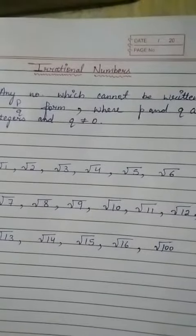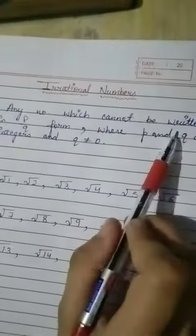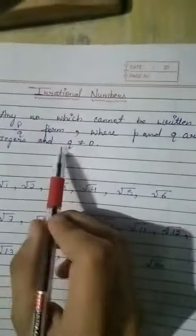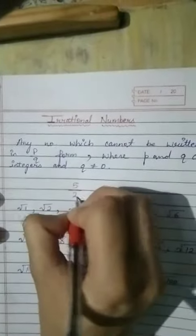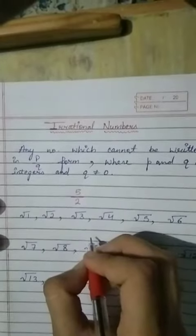Hello guys, in this video we will discuss about irrational numbers. So any number which cannot be written in P by Q form where P and Q are integers and Q is not equal to 0, any number which cannot be written in fraction form, we call it an irrational number.